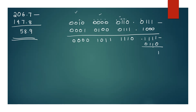1 minus 0 is 1. 1 minus 1 is 0. 1 minus 1 is 0. 1 minus 1 is 0. Now 0110 minus 0000. 0 minus 0 is 0. 1 minus 1 is 0. 1 minus 0 is 1. 1 minus 0 is 1. 1 minus 1 is 0.